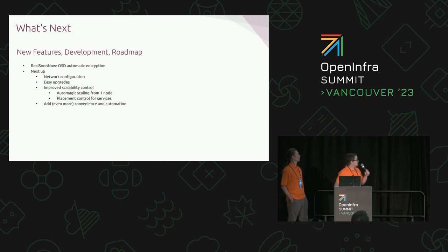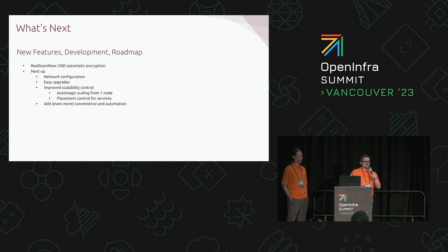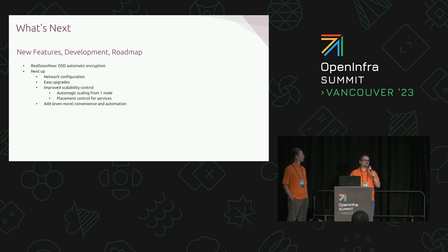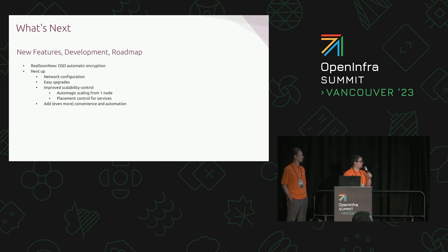We have a lot of exciting things on the roadmap. MicroCeph is still relatively new — very early days. We're trying to add a lot more Ceph features and expose them to the end user. We're going to encrypt the OSDs, and we've got a lot of things planned for scalability. Even though we're targeting small use cases, we want people to be able to have three or five nodes for edge deployments that need block or object storage. And we want to make it even more convenient and streamlined so you can get on with the work you actually need to do.